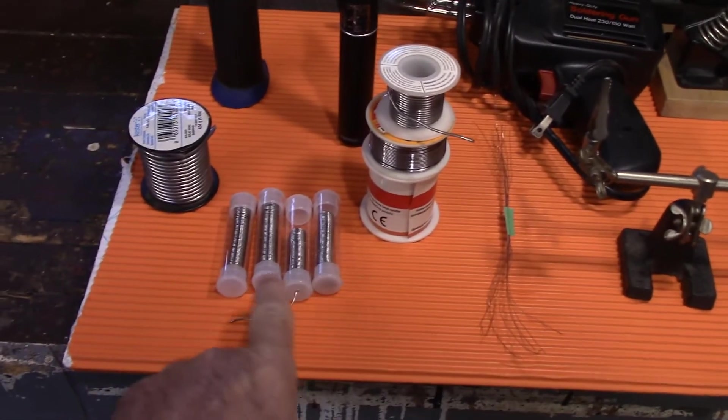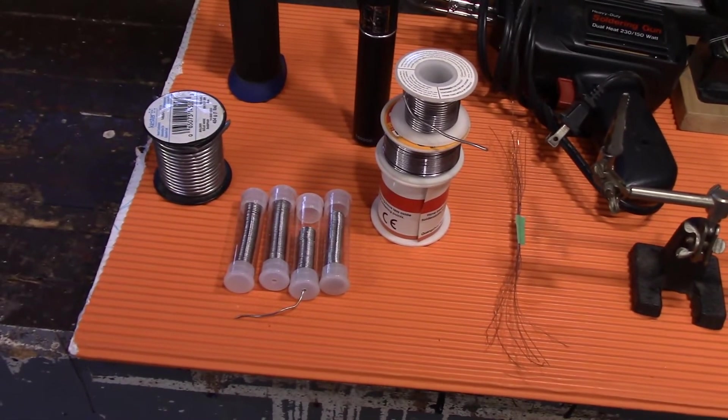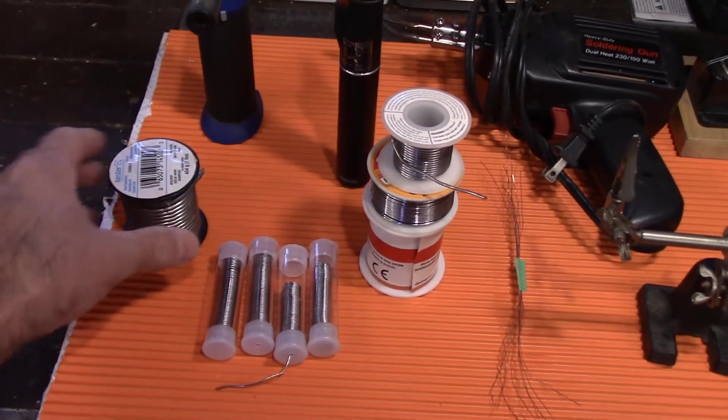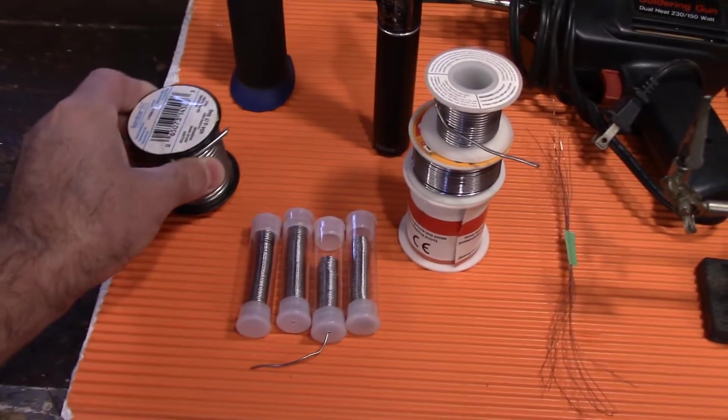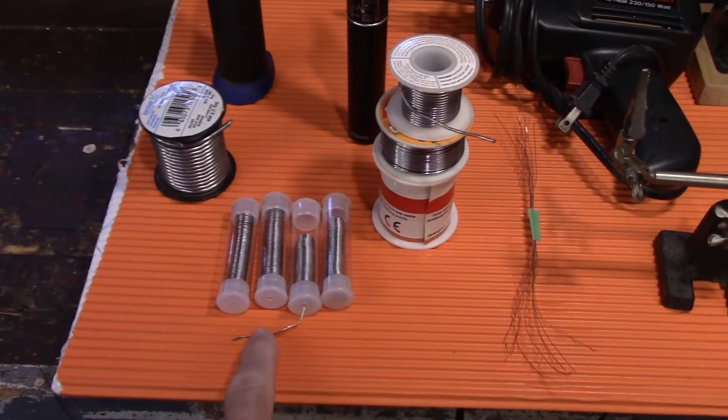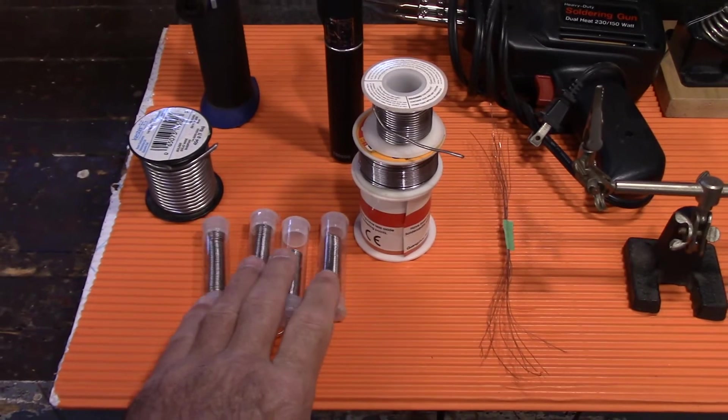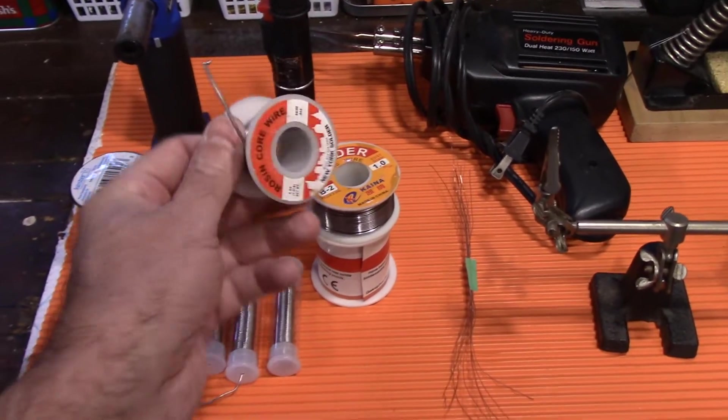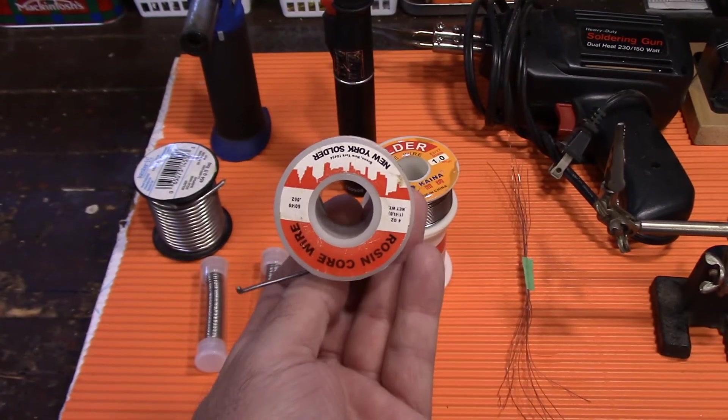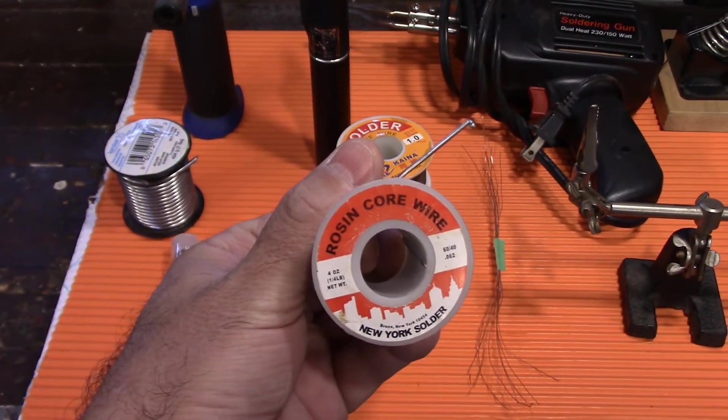And of course, you can see your solder comes in various sizes and thicknesses and you don't use plumbing solder. This is plumbing solder. You don't use plumbing solder, you use solder for electrical work. So you've got two different types. You've got rosin core and flux core. You want to go with this style right here.